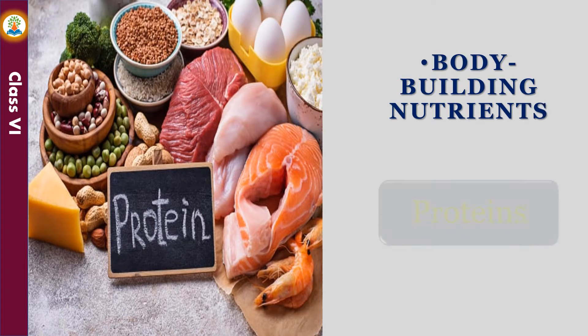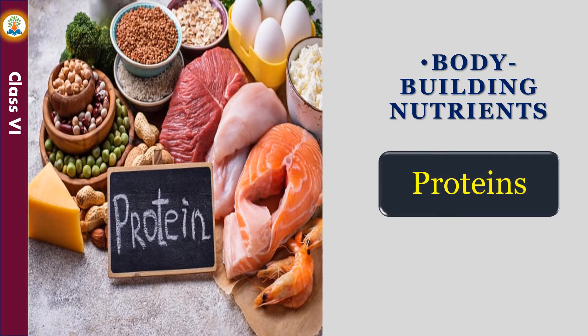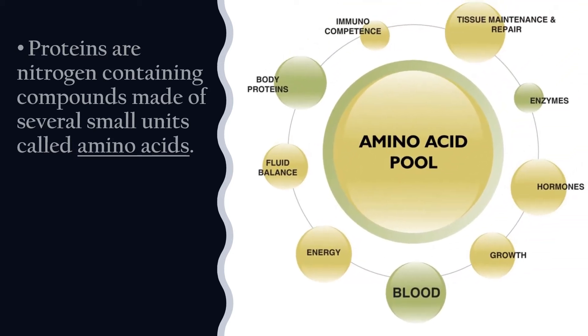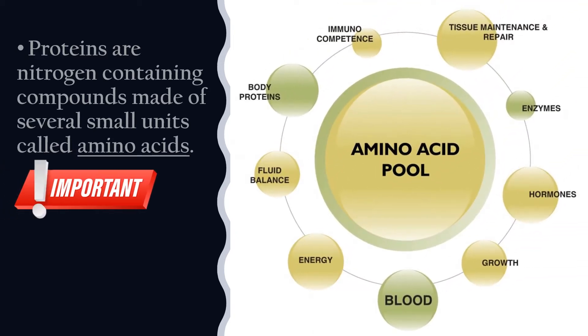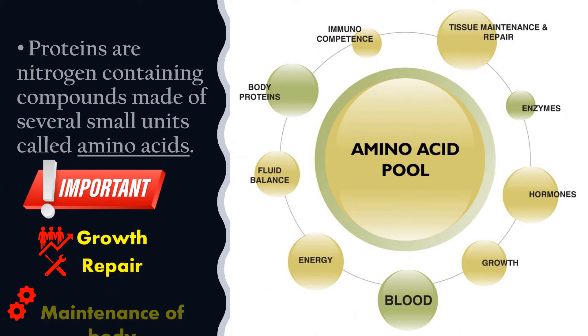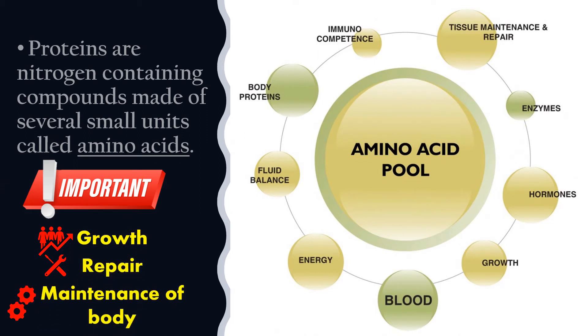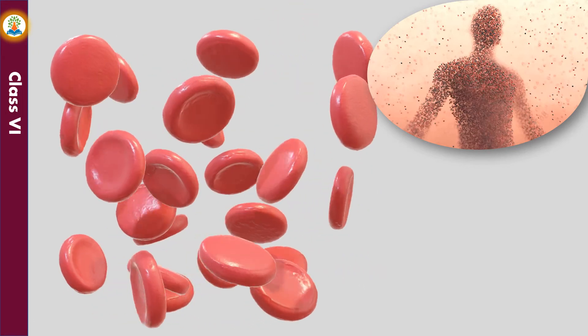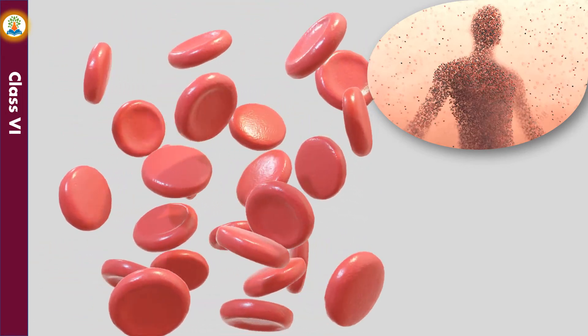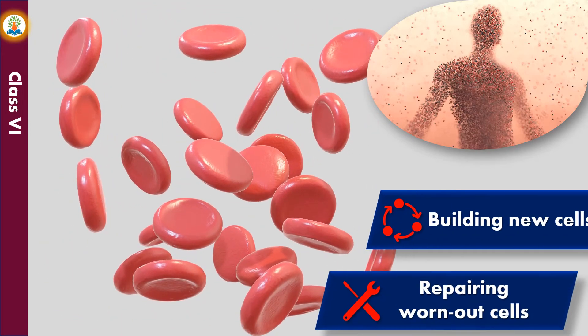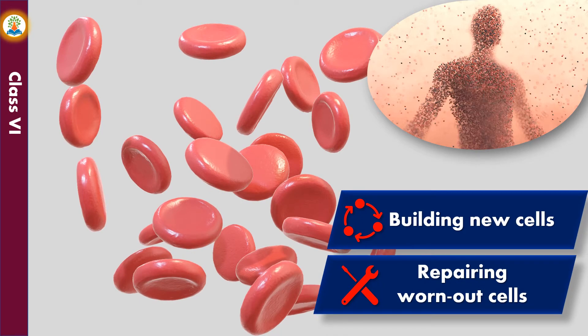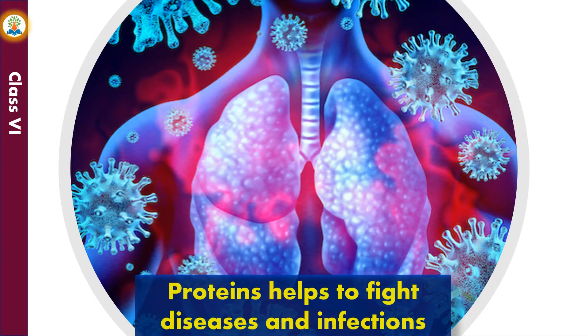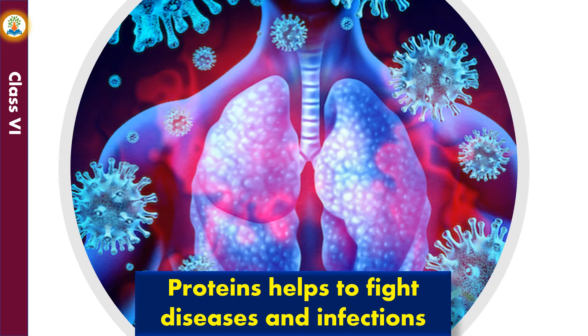Bodybuilding nutrients are rich in proteins. Proteins are nitrogen-containing compounds made of several small units called amino acids. Proteins are extremely important for growth, repair, and maintenance of body cells. Proteins are required for building new cells and repairing worn-out cells, and they help to fight diseases and infections.